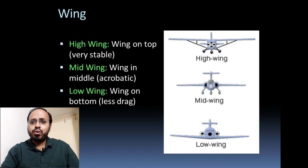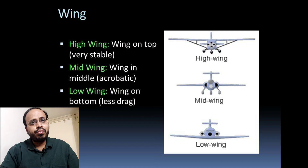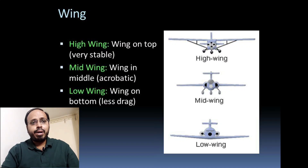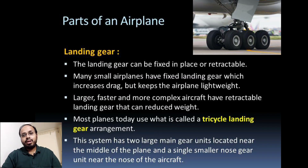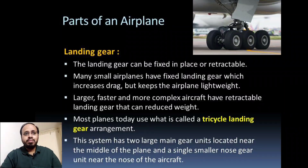For the low wing configuration, the wing is mounted at the bottom of the fuselage, which produces less drag. All three configurations are useful for different purposes, and different aircraft use different wing configurations depending on the operational requirements.